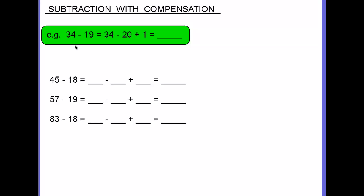So first of all, the example is 34 take away 19. Now 34 take away 19 is quite a lot to think about when you're taking away 19. There's a fair amount of subtraction going on there, so how can we make it easier?